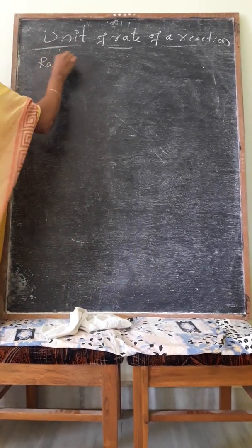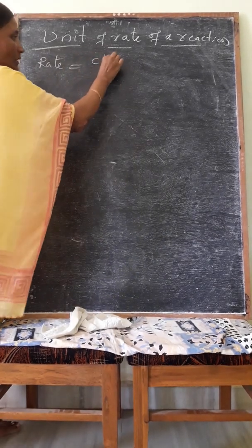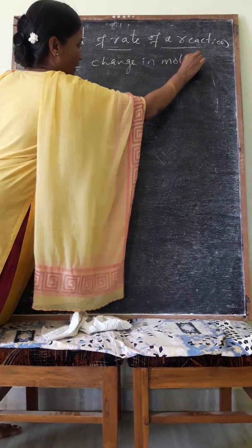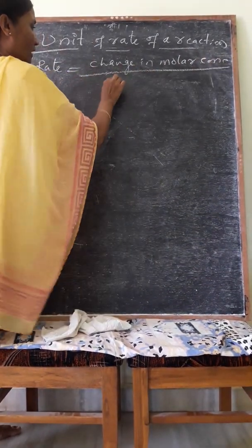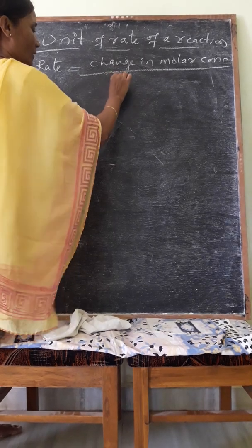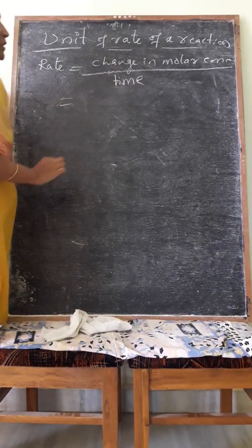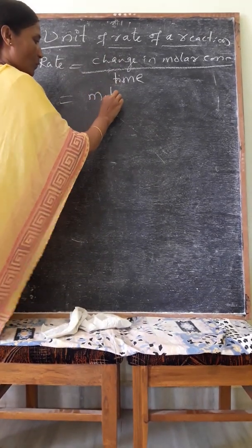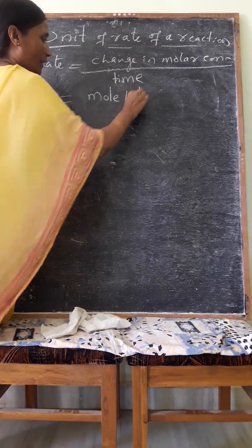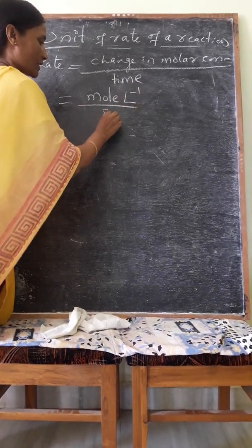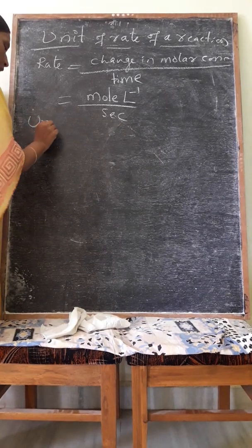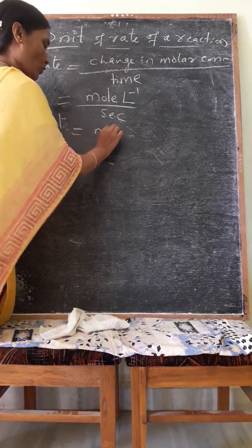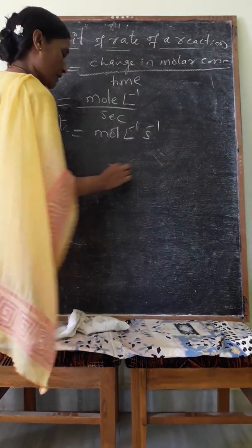According to the definition of rate, it is nothing but change in molar concentration — change in molar concentration of any quantity with respect to time. Change in molar concentration is taken as moles per liter. Time is taken in seconds. Therefore, the unit of rate is equal to mole per liter per second.